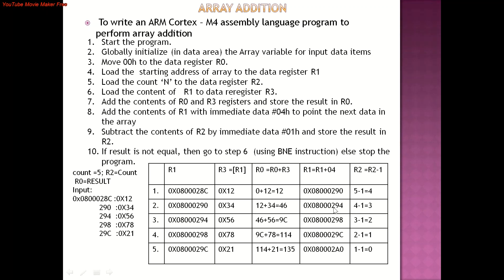The count is decremented and 34 is added: 12 plus 34 gives 46 in R0. Next, 56 is fetched and added with 46, giving 0x9C. Then 78 is fetched and added with 0x9C, giving 0x114. Finally, 21 is fetched from memory and added with 0x114, giving a final result of 0x135. R2 now becomes 0, so the zero flag is set and the program terminates.